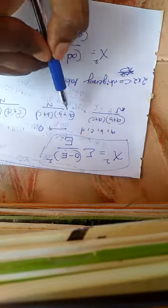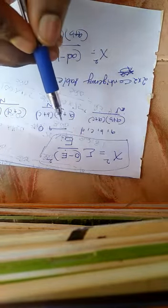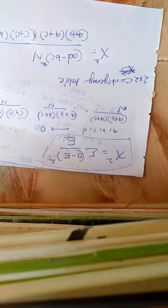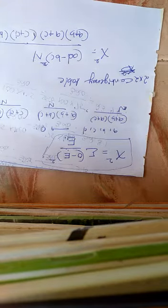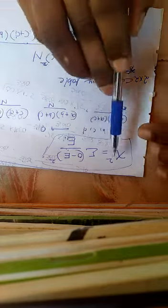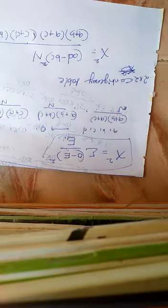We find out observed frequencies and expected frequencies, and O minus e square, and independently O minus e square divided by e. Each of the values you find out, then you find a sum and some value is chi square.